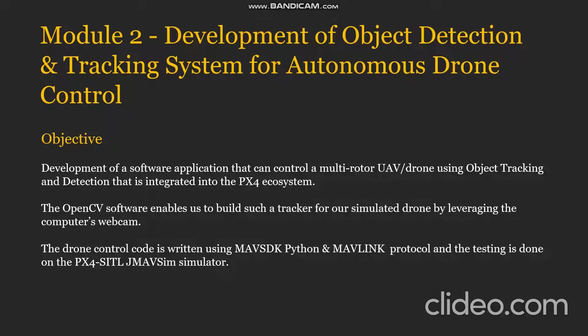Module 2: Development of an Object Detection and Tracking System for Autonomous Drone Control. In this module, the objective is to create a software application that can control a multi-rotor UAV using object tracking and detection algorithms, integrated into the existing PX4 software ecosystem. The OpenCV software enables us to build such an object tracker for our simulated drone. Since the drone is a simulated one, we can also leverage the computer's webcam to identify and track an object. The drone control code is written using MavSDK Python and the MavLink protocol is used for communication between the various subsystems. Testing is done using the PX4 SITL — that is, the software-in-the-loop simulator — in this case, the JMAF simulator.